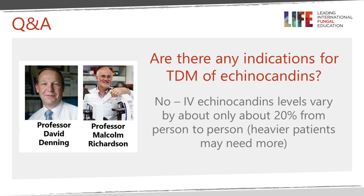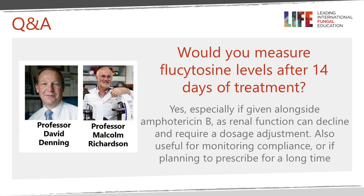Regarding echinocandins — there is good reliability with IV echinocandins for all three drugs, with about 20% person-to-person variation. There are some indications that very overweight or obese patients require higher doses, but no relationship between slightly higher or lower echinocandin levels and outcome has been found to date. The drug is also redistributed from serum into tissue with active uptake. To the speaker's knowledge, there are no indications for measuring echinocandin levels.